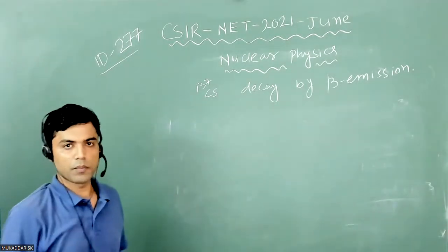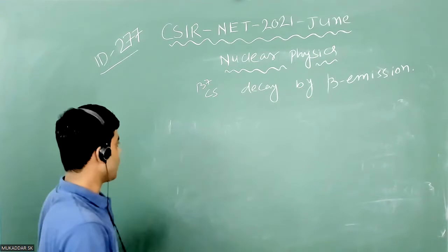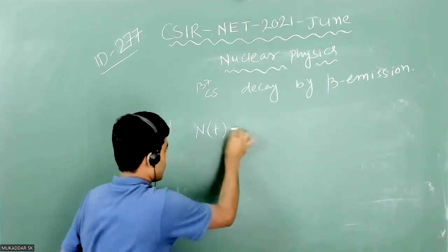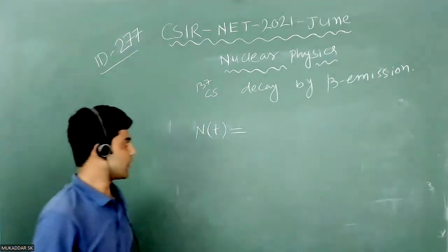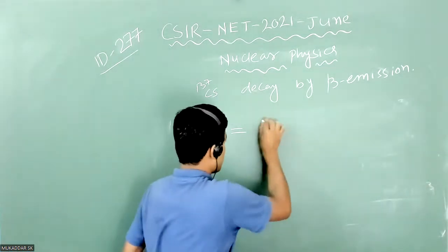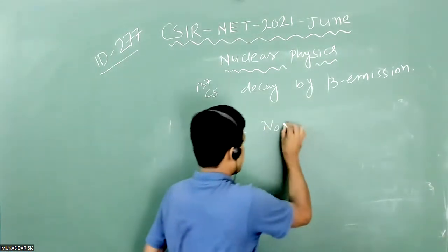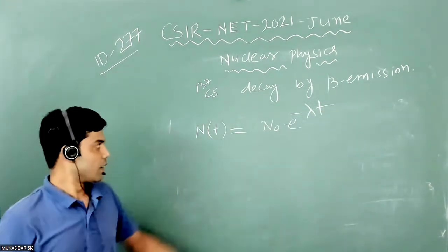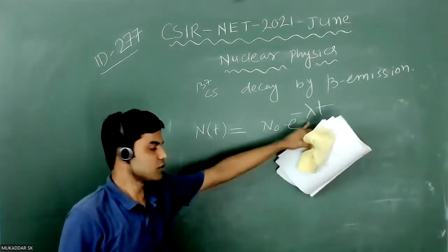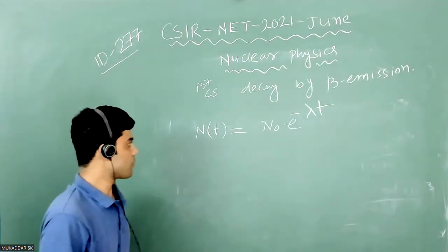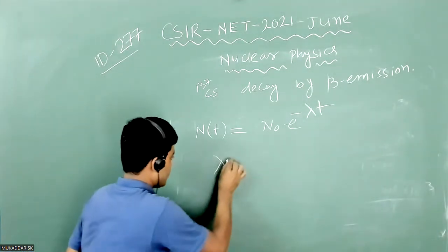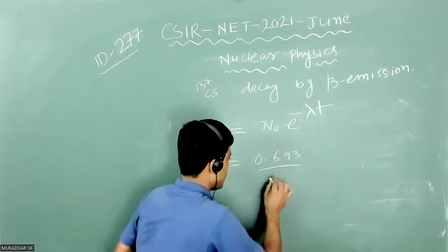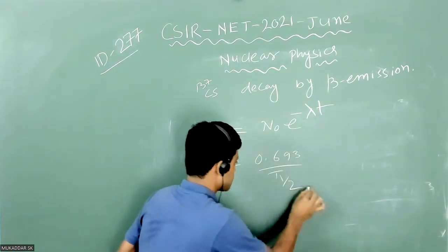From the basic formula of radioactive decay, the number of atoms present in the system after time t is N = N₀e⁻λt. Lambda is the disintegration constant and it has relation with half-life: λ = 0.693/t₁/₂.